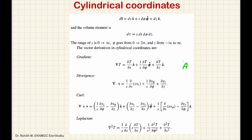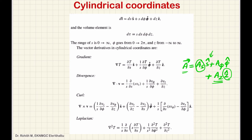When we have a vector in cylindrical coordinates, it has an s-cap component, a phi-cap component, and a z-cap component. The coefficient of s-cap is the s component of the vector. We then compute the needed partial derivatives, substitute, and simplify.